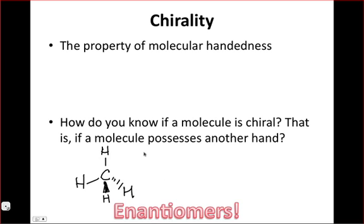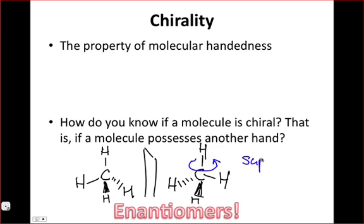The mirror image of methane, if we just reflected it through a mirror and literally drew what we saw, would look something like this. We could simply superimpose these molecules by taking the mirror image and rotating it about an axis. And so these are superimposable mirror images. And the fact that they're mirror images is pretty much irrelevant, because they're the same molecule.